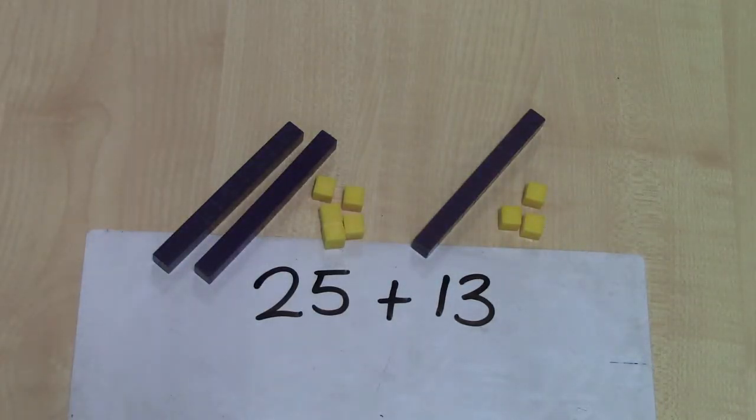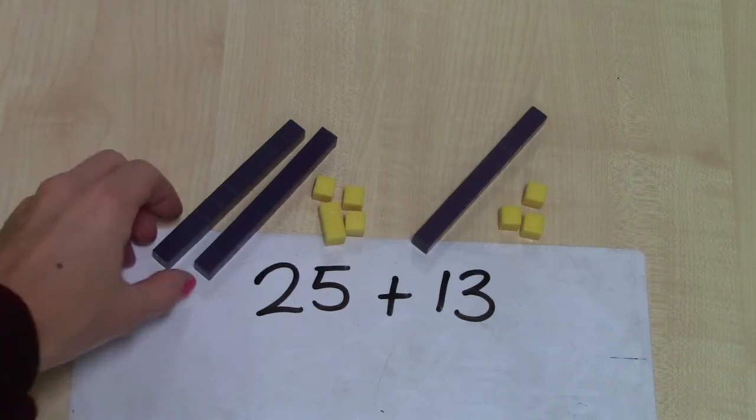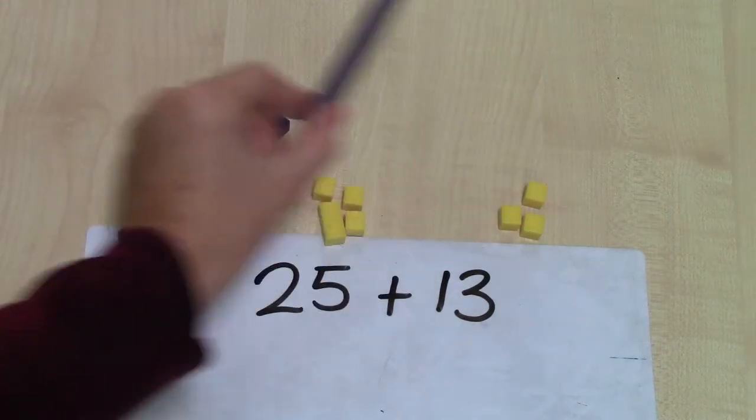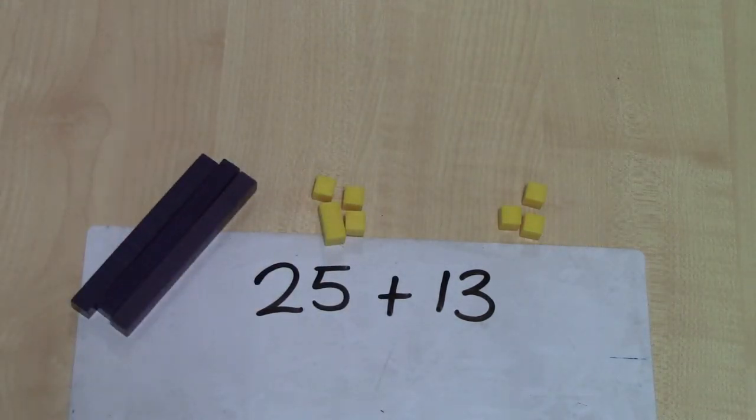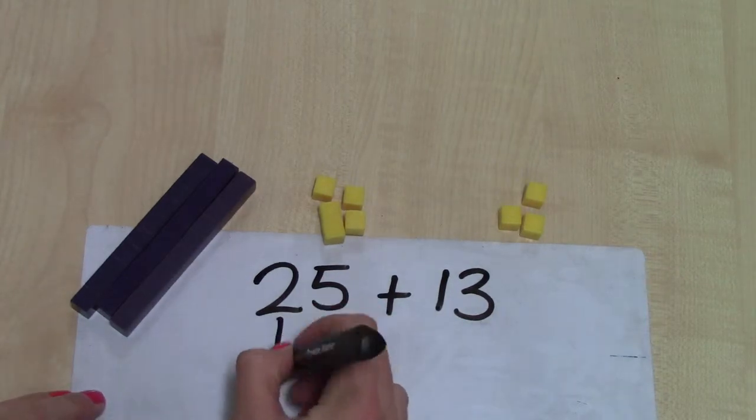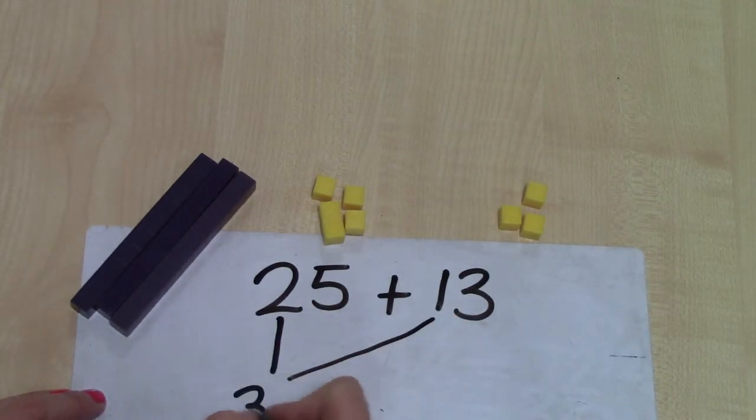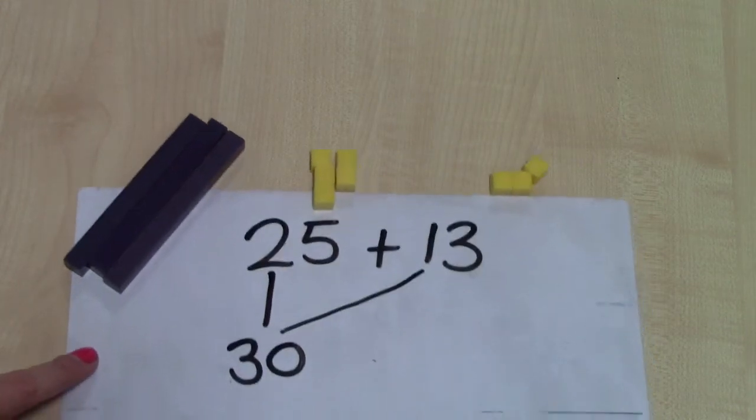I could start by adding my tens first and then my units, or I could start by adding my units first and then my tens. I think I'm going to start with my tens. I've got two tens and another ten. I've got three tens altogether. So two tens and one ten gives me three tens. It gives me 30.